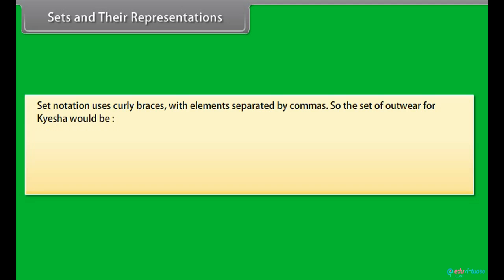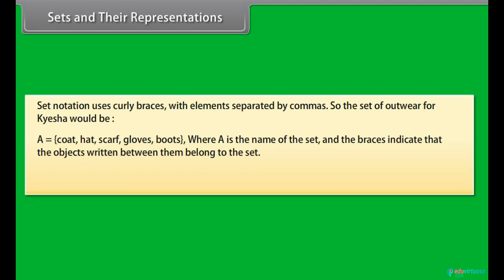Set notation uses curly braces with elements separated by commas. So, the set of outwear for Kyesha would be A equals coat, hat, scarf, gloves, boots, where A is the name of the set and the braces indicate that the objects written between them belong to the set.